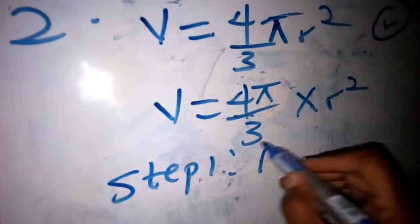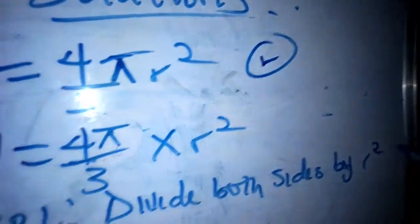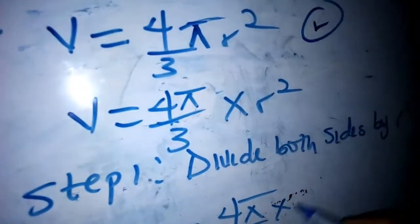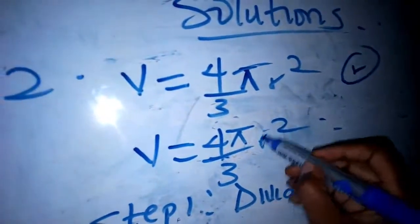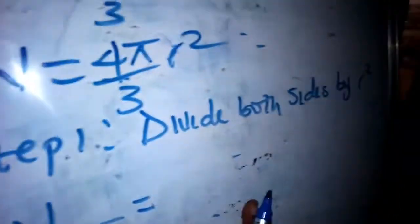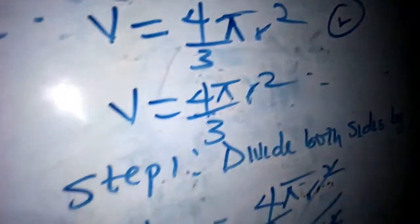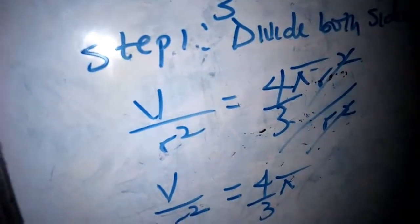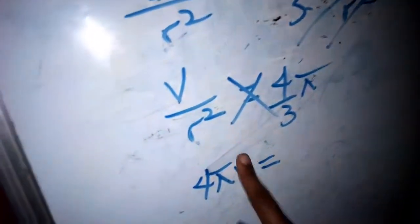Step one: divide both sides by r squared. So we have V over r squared equals 4 over 3 pi times r squared over r squared. The r squareds cancel, so we are left with V over r squared equals 4 over 3 pi. What we do here is cross multiply, giving us 4 pi r squared equals 3V.